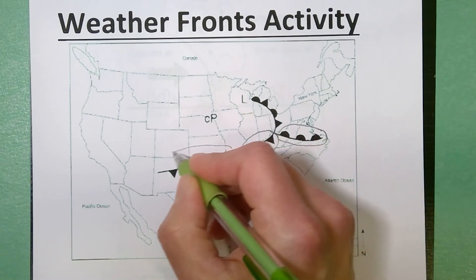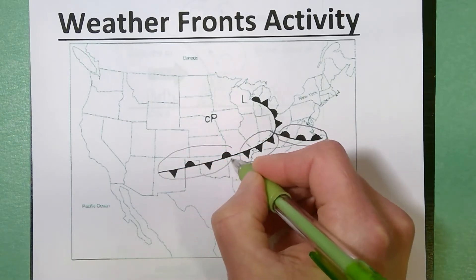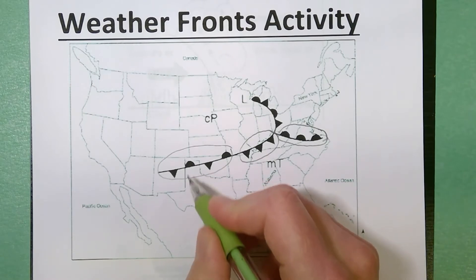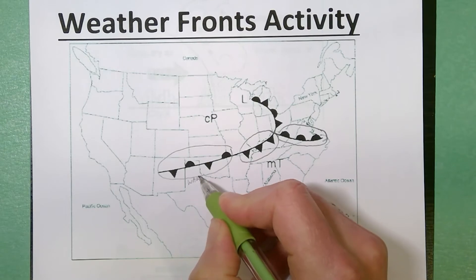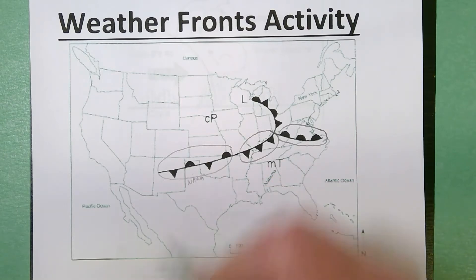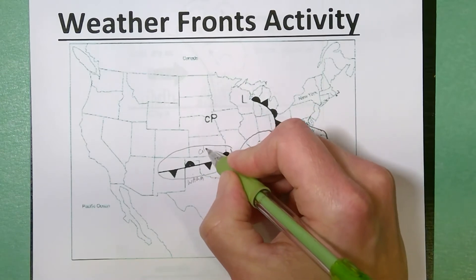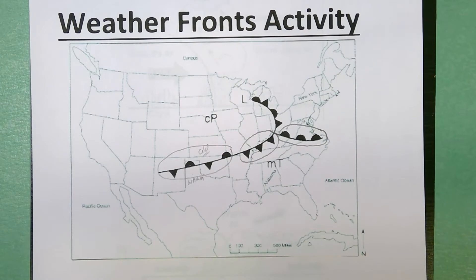This section over here is showing you the symbol for a stationary front. On the stationary front the warm front and the cold front symbols are opposite each other. This side would be the warm side so you'd have the tropical air mass. The warm air goes behind the warm front symbol and then the cold front symbol is here so this side is the cold side and you see the continental polar air.